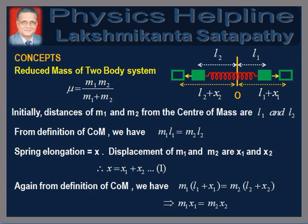Before proceeding to solve the problem, let us recall the related concepts. The reduced mass of a two-body system: when a system of two bodies of masses M1 and M2 connected by a spring is set into simple harmonic oscillations, the effective mass is given by μ = M1·M2 / (M1 + M2), which is called the reduced mass of the system.